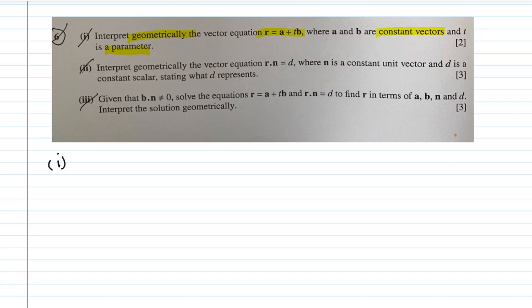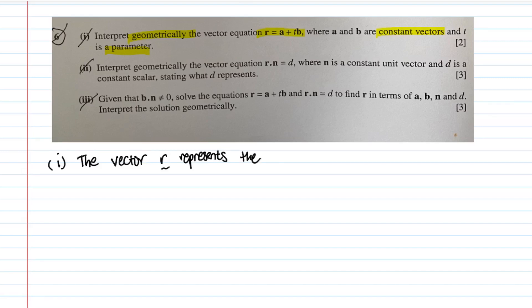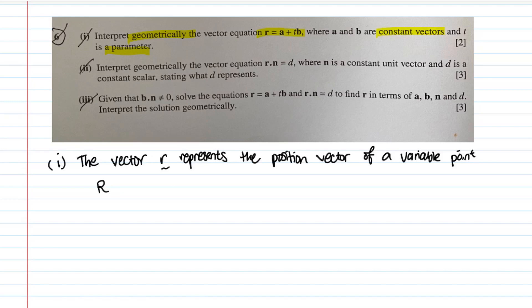Part one is very simple — this is the basics of vectors. The form r equals a plus tb is how vectors are usually expressed. The vector r represents the position vector of a variable point. So whenever you see r equals something, it is a variable point, meaning any value you substitute can take the place of r. This is actually the equation of a line.